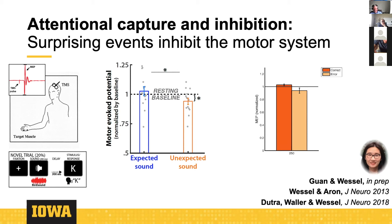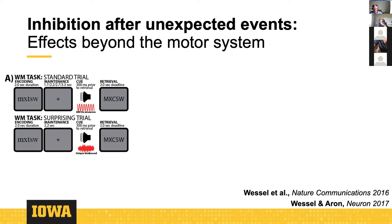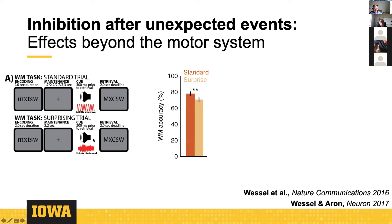Yao Guan in my lab has evidence that the same thing occurs after action errors, since we think action errors are just a specific example of an unexpected event. But in the current study I want to talk about the interruption of cognitive processing. We ran a simple working memory paradigm — a Sternberg-type task — where you see a stimulus, have a delay interval, then see a second string of letters and decide whether it matches. During the delay interval you expect a certain beep tone, but in the experiment it's replaced by an unexpected birdsong segment.